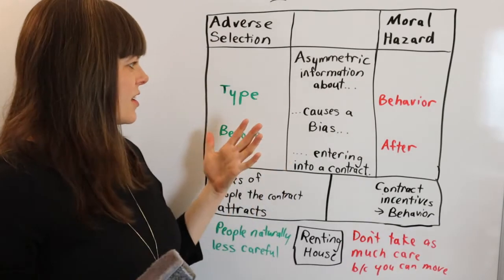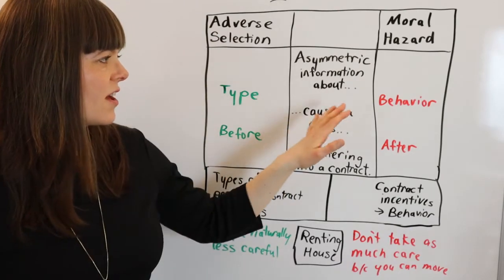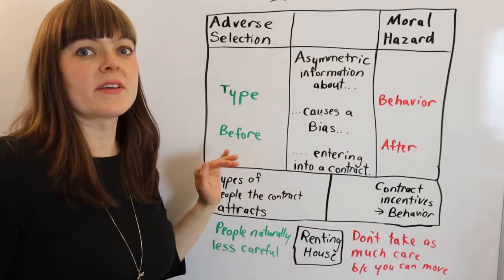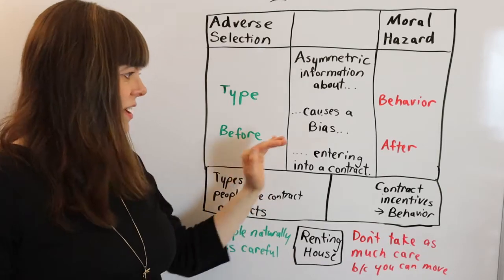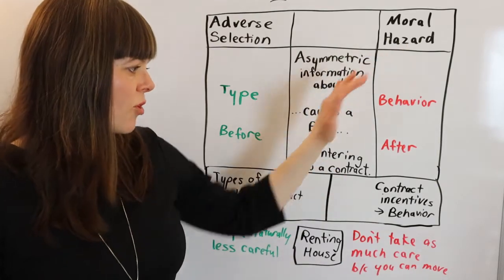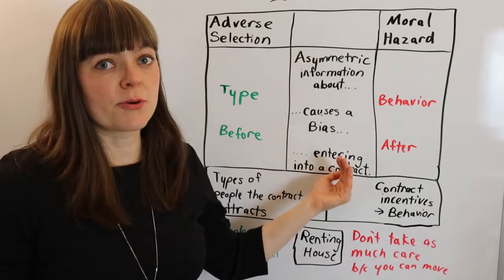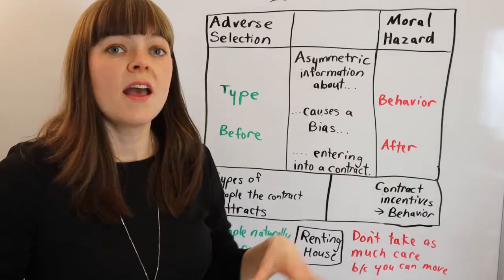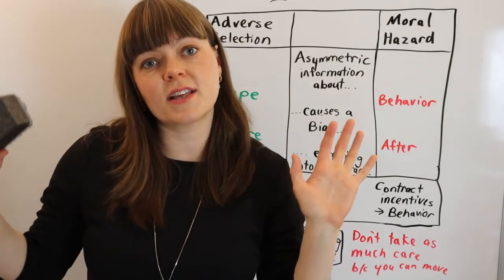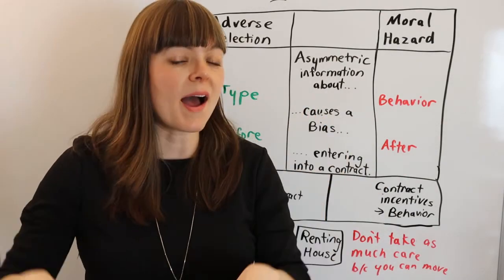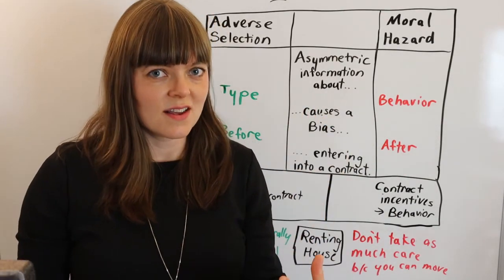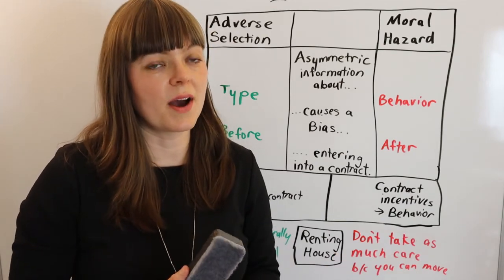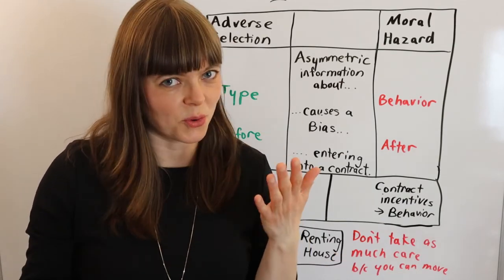So that's adverse selection and moral hazard. The key difference: adverse selection is about the type of person attracted to a contract, while moral hazard is about their behavior based on the incentives in the contract. Both create a bias in the actual product that the contract is meant to enact in the world.